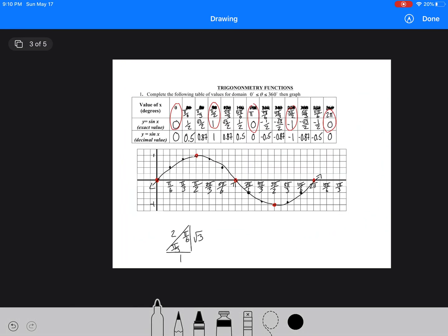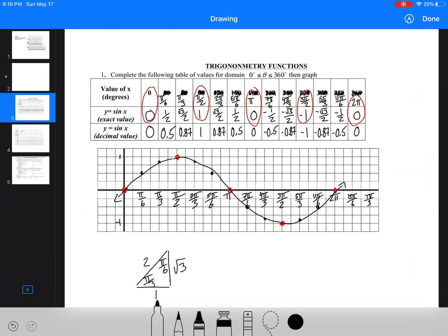Again, the five points that are super important are 0, 0, pi by 2 and 1, pi and 0, 3 pi by 2 and negative 1, and then 2 pi and 0.